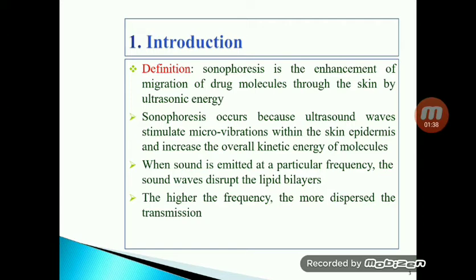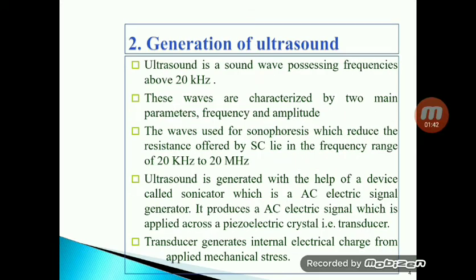To produce ultrasound waves, we use an ultrasonic device which produces alternating electric signals that pass through a transducer. The transducer generates an internal electric charge from applied mechanical stress. We need to produce a frequency range of 20 kilohertz to 20 megahertz to reduce the resistance of the stratum corneum.